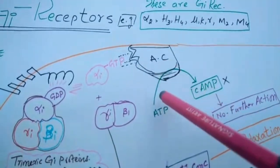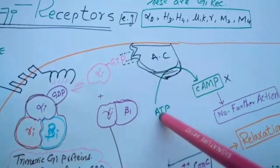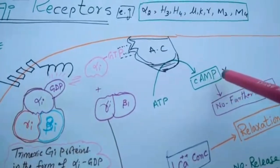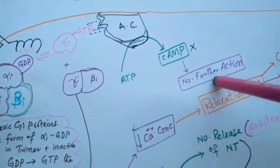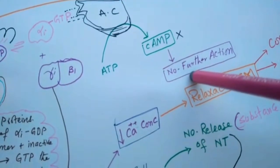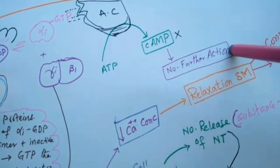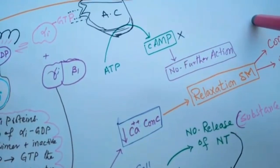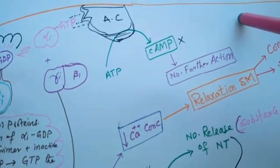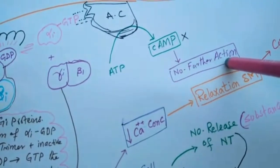When it cannot convert ATP into cAMP, the cAMP cannot activate kinase enzyme and cannot open the calcium channel. So calcium level will decrease inside the cell, meaning no further action.